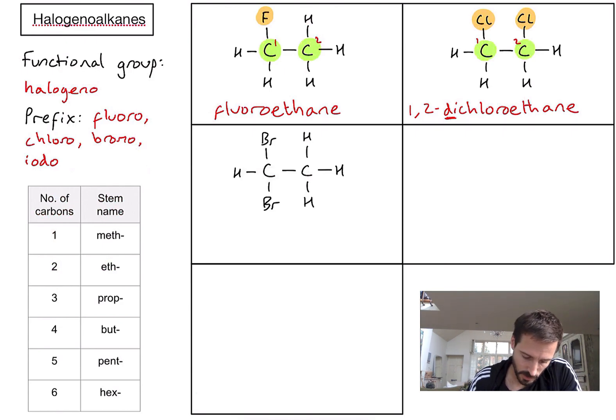Example number three. This time we've got two bromines. Let's identify how many carbons there are. Again, there are two carbons. So the stem part is eth and the end is -ane just like before.